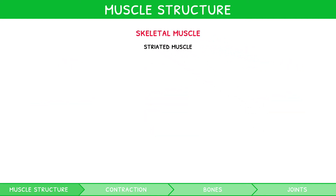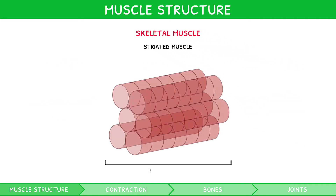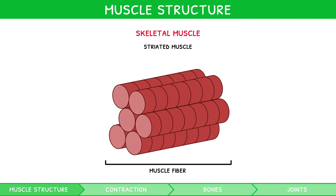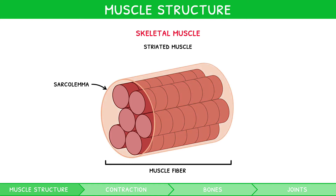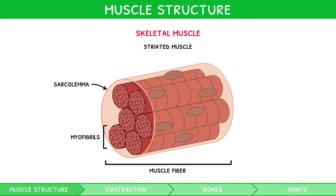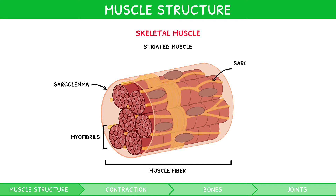Let's cover its structure. It consists of many muscle fibers, which are long cells formed by the fusion of embryonic muscle cells. The fibers are surrounded by a single plasma membrane known as the sarcolemma, which contains many nuclei. Within each fiber are many smaller fibers known as myofibrils. These are surrounded by a single membrane known as the sarcoplasmic reticulum, which stores calcium and acts to coordinate contraction. Between myofibrils are many mitochondria to produce ATP for contraction.